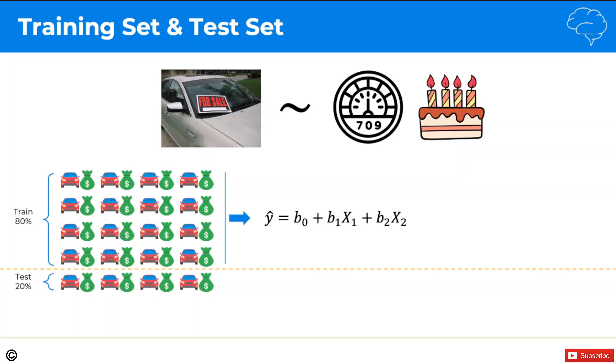We'll use our training set to build the model. So in this case, we're building a linear regression. And then we will take the cars from the test set, we will apply our model to them. So they haven't been part of the model creation process. The model has no information about these cars. And now we're applying this model to them and it's predicting certain values, certain prices.